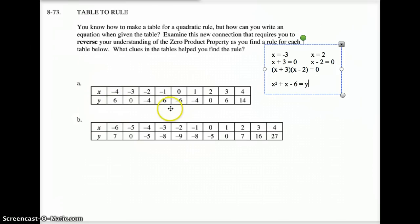And if you plug in any of these points, you might notice 0 here. 0 plus 0 minus 6 is negative 6. That works for this one. Negative 1 here. Negative 1 squared is positive 1, plus negative 1. Those two zero out, minus 6 is negative 6. If you plug in all of these points right here, it'll work for this one.